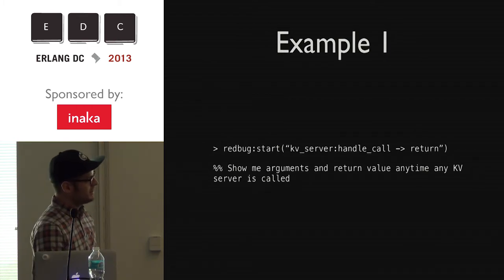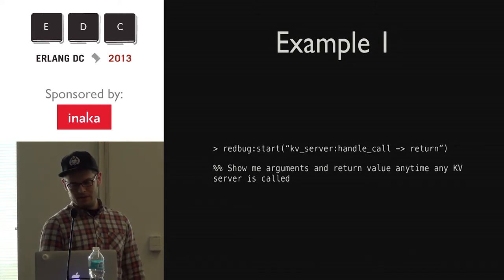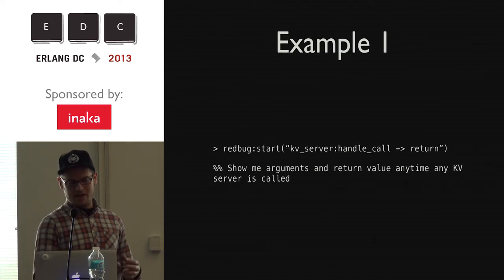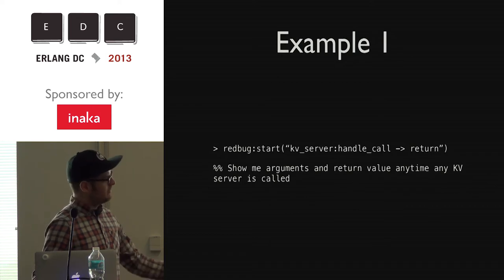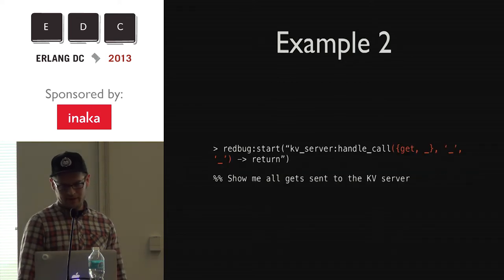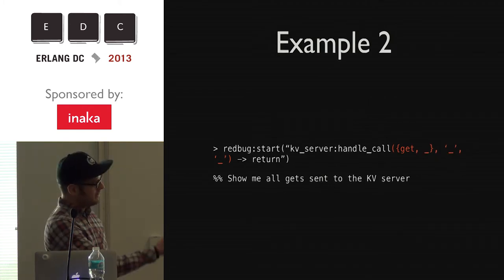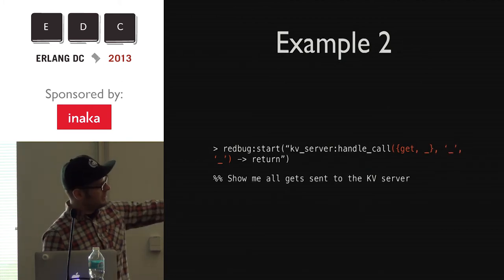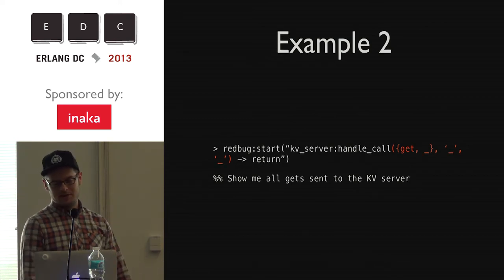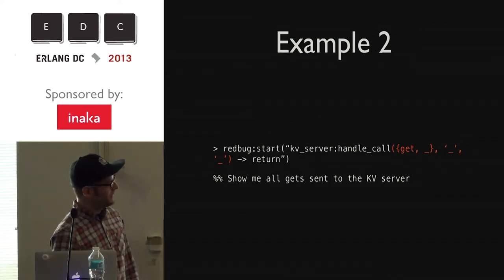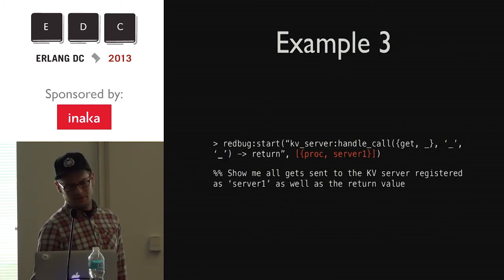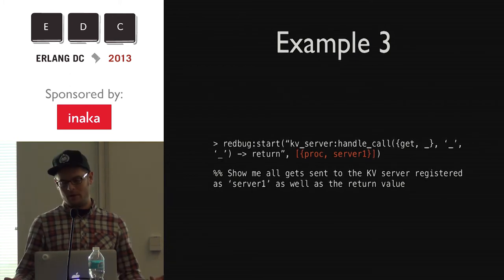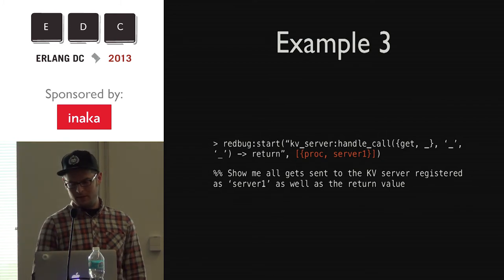As an example, let's say you had a KV server — a gen_server that handled simple key-value stuff. In this first example, I'm saying show me all calls to the KV server's handle_call function and show me what it returned, so you can see all calls coming in. Then maybe I only want to see the gets: you say kv_server, handle_call, and you specify how the function is called, matching against the first tuple element. The other two are wildcards. And you can narrow it further to only gets to a server registered as server_one.